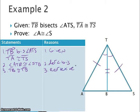Now I see that I have a side angle side, so I can prove my triangles congruent. So triangle ATB is congruent to triangle STB.